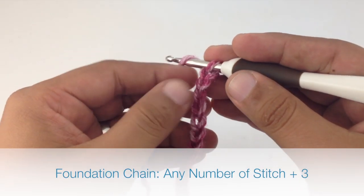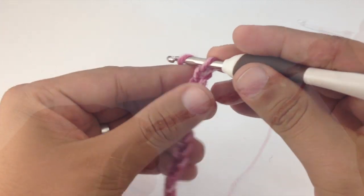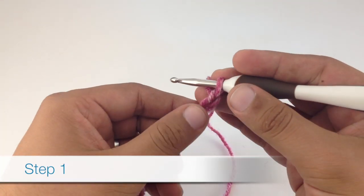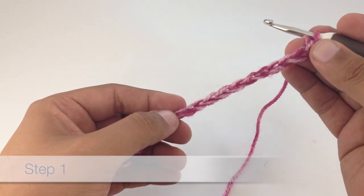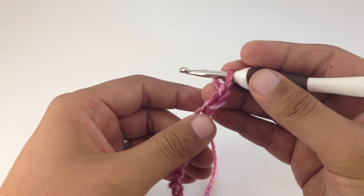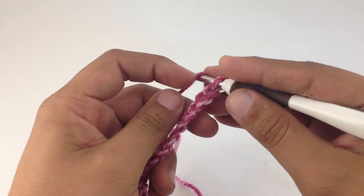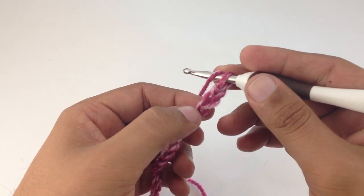To begin this stitch you must create a foundation chain in any number of stitches plus three. Step one: Once we've created our foundation chain to the length that we want our curlicue to be, and we've done our additional three stitches, we are going to do a double crochet into the fourth stitch in our chain.